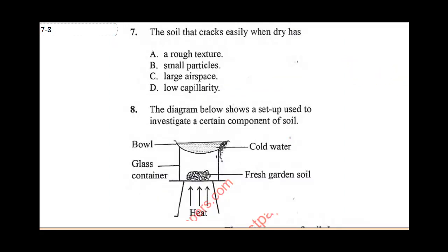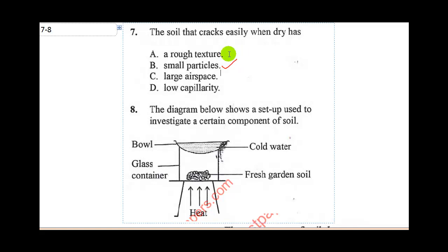Question seven says: the soil that cracks easily when dry has what properties? That soil is clay soil. The properties of clay soil are: it has small particles — when you touch it the particles are very fine. Clay soil has high capillarity because it holds water well. It has small airspace, which is also why it holds water. It has a smooth texture. So the correct answer in question seven is B.